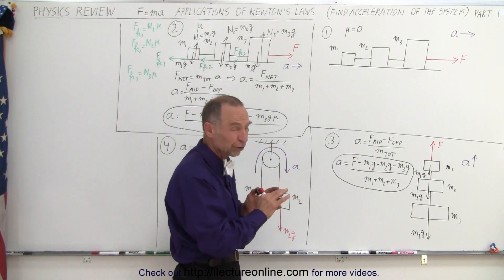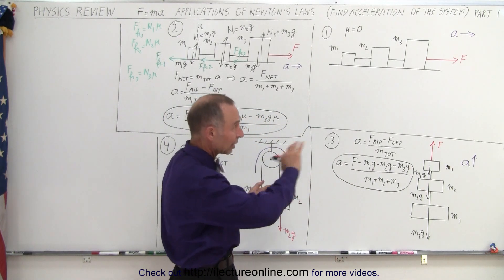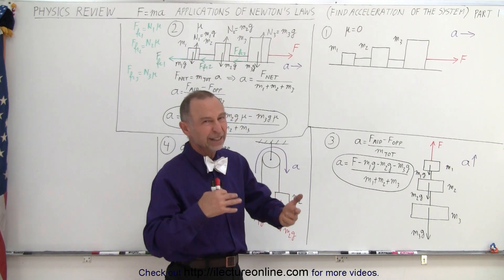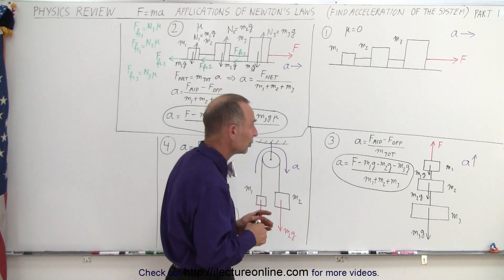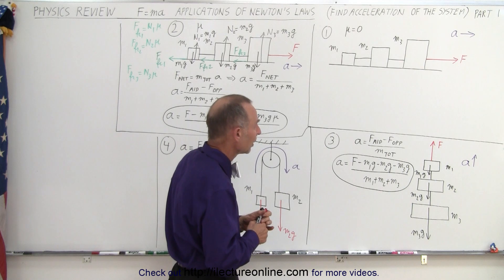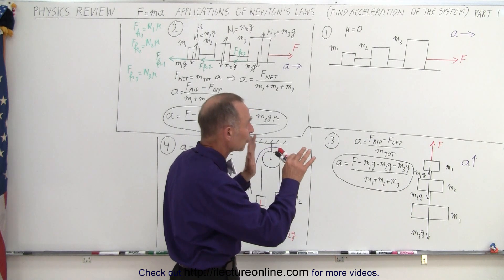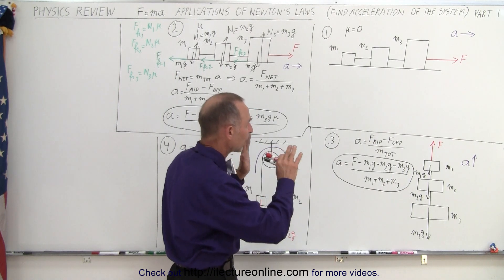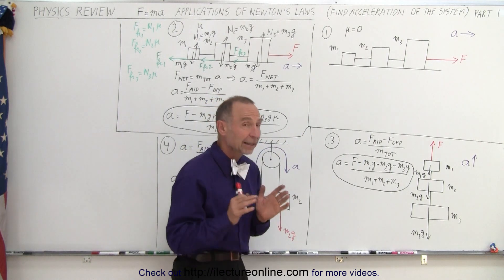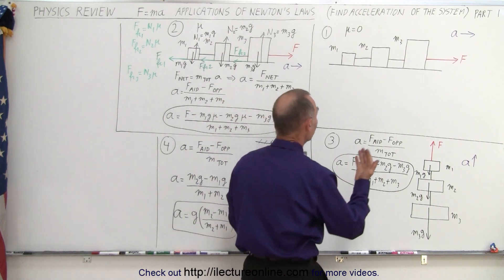Sometimes you're not quite sure — you just pick a side and say okay, I think it will accelerate like this, and if you're wrong you'll get a negative answer. So then you can redo it with a different direction. The first thing you do is assume the direction of acceleration, draw the diagram, and now you need to identify all the other forces that exist.